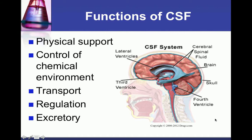CSF has several functions: physical support, control of chemical environments, transport, regulation, and excretory. For physical support, it surrounds and cushions the brain from any traumatic event. It is 99% water, which means it has a low cell count, and it gives the brain a buoyancy effect of floating inside the skull. CSF also transports ions, neurotransmitters, and neuropeptides to areas of the brain where they may be needed.